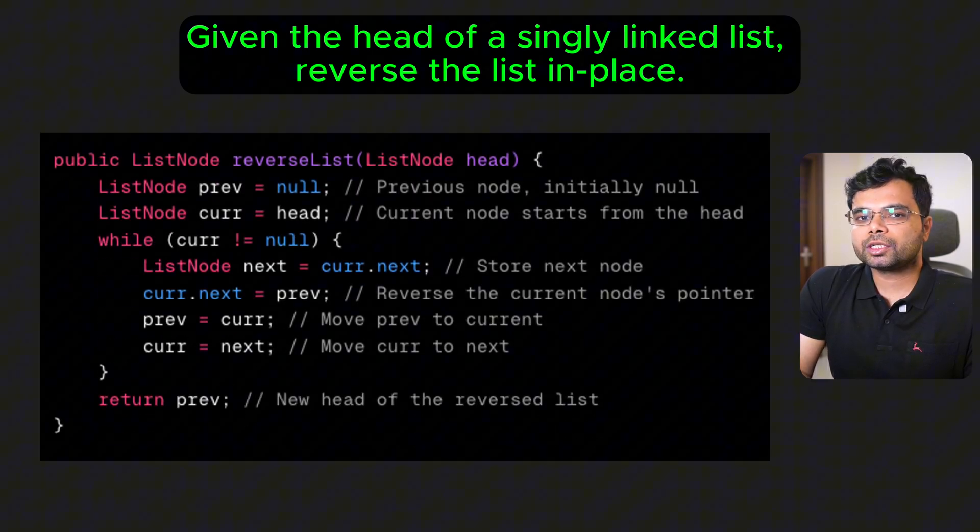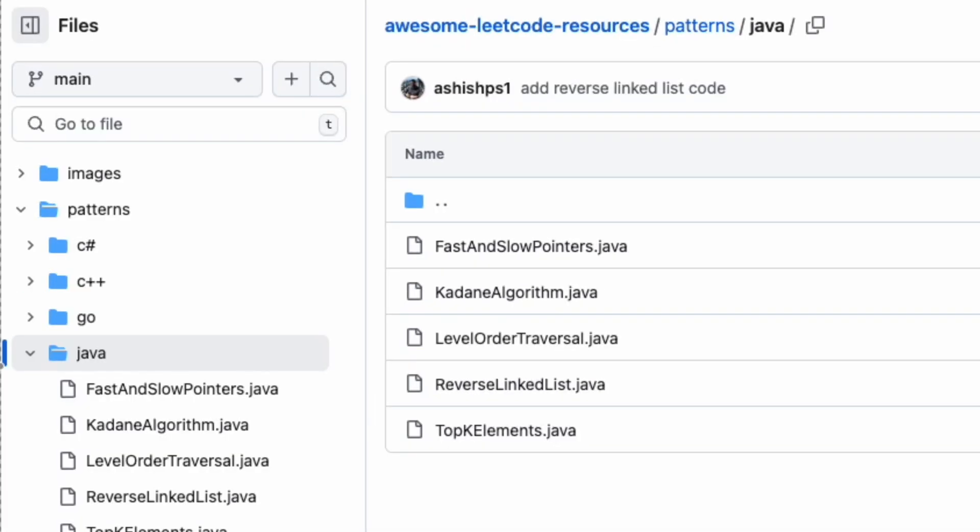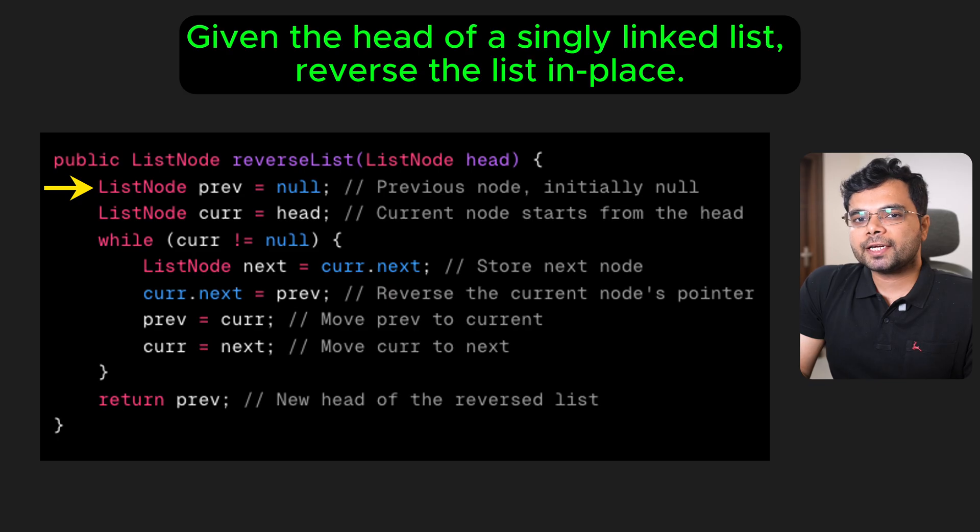how it looks like in code. Here I am using Java, but you can find code for other popular programming languages in my GitHub repository called Awesome LeetCode Resources. Link is in the description. Start by initializing previous to null and current to the head of the linked list. Iterate